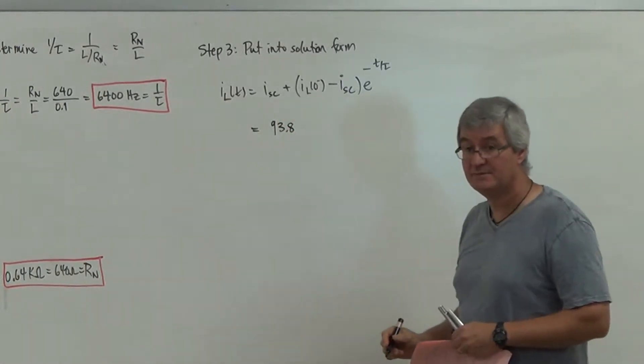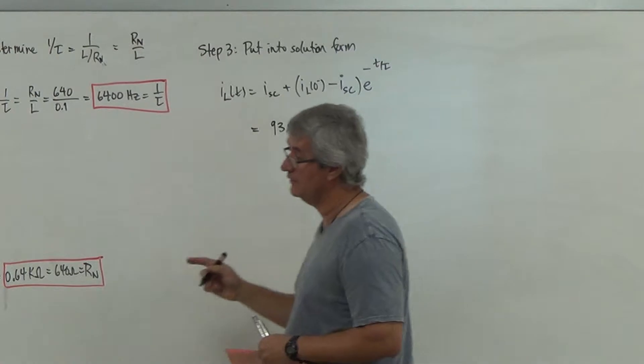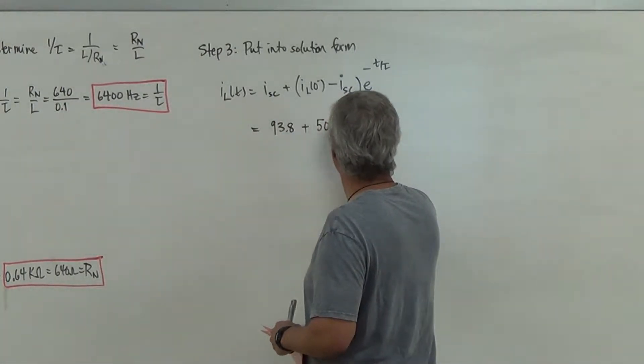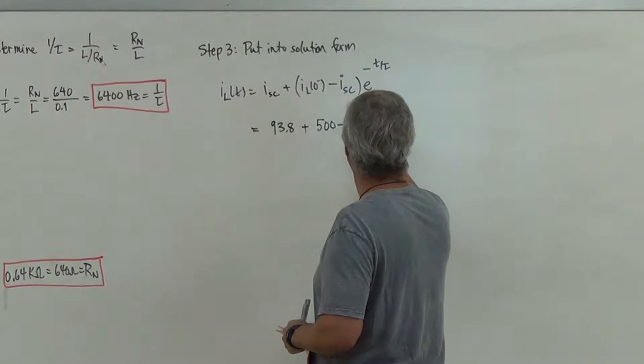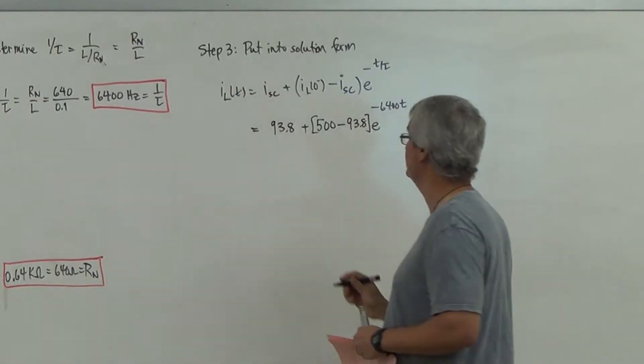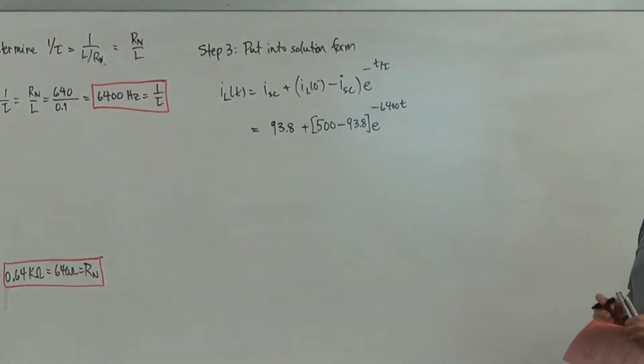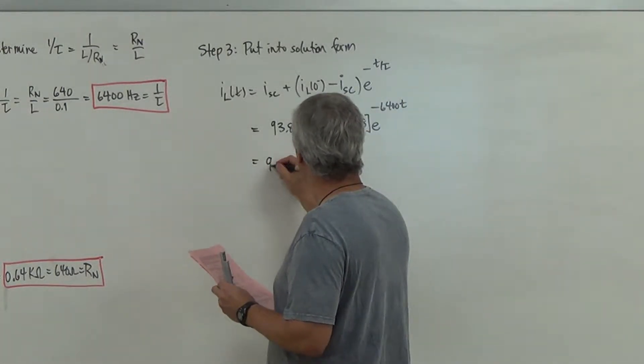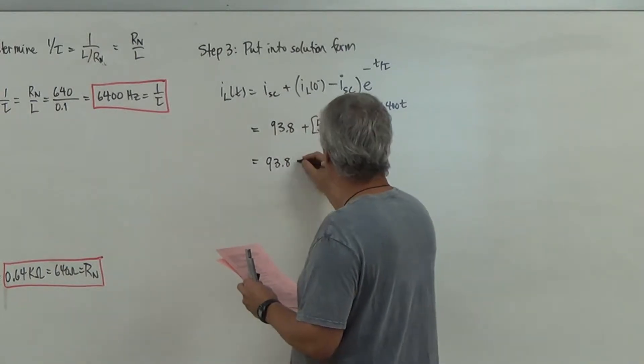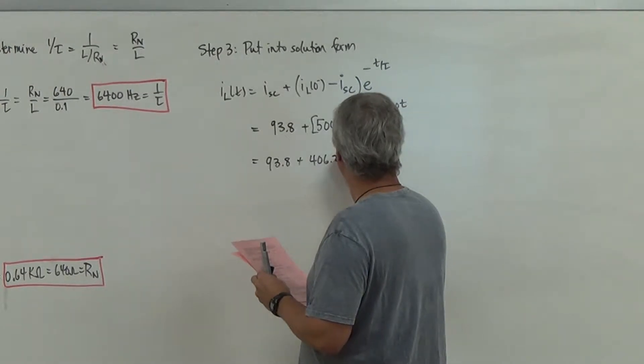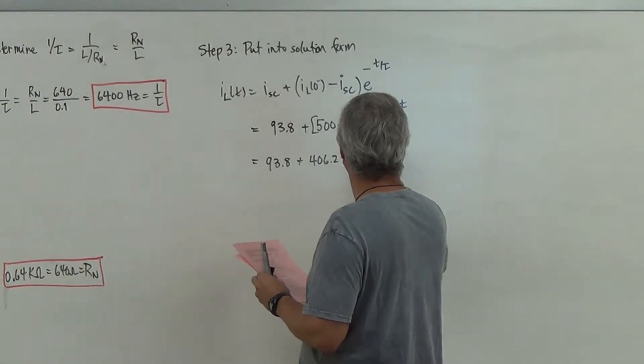These will all be in units of milliamps, plus its original current, which is 500. So I'm going to get 500 minus 93.8, E to the minus 6400T. So if I clean this up a little bit here, what I'm going to get is 93.8, and then this will be 406.2 E to the minus 6400T.